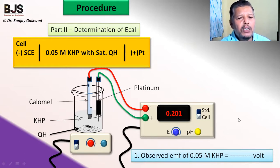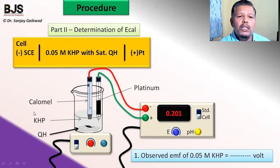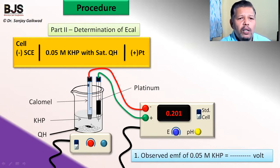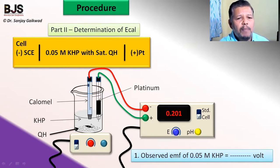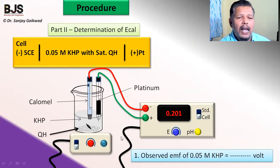KHP is potassium hydrogen phthalate. It is a weak acid salt that acts as a buffer and is the primary standard in the laboratory. Therefore, we use the 0.05 molar potassium hydrogen phthalate solution, which has a pH exactly equal to 4. This primary standard is used for the measurement of E_cal with the help of the potentiometer.